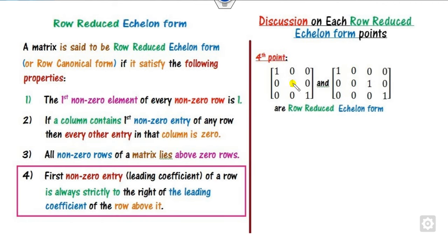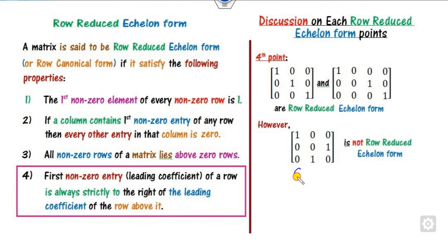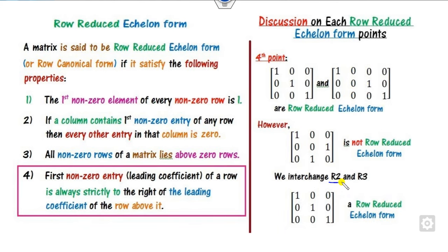Are these matrices in row reduced echelon form? Yes — the first element is 1, above and below elements are 0, and the leading entries appear in column 1, then column 2, then column 3, preserving the indexing. However, another matrix is not row reduced because its leading entries appear in columns 1, 3, then 2 — not preserving the ordering. Interchanging rows 2 and 3 fixes it.